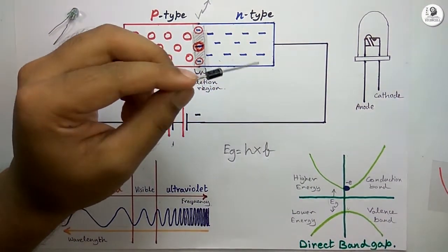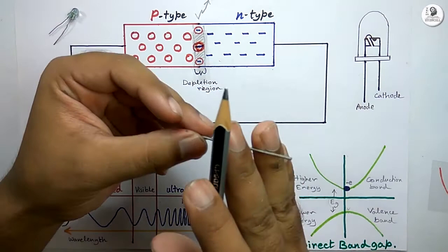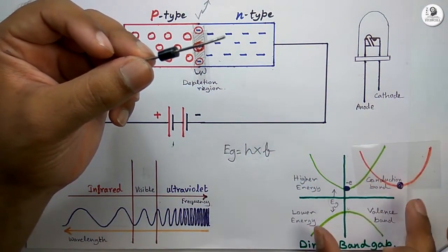For this ordinary PN junction diode, the semiconductor uses germanium or silicon, which are indirect bandgap semiconductors.